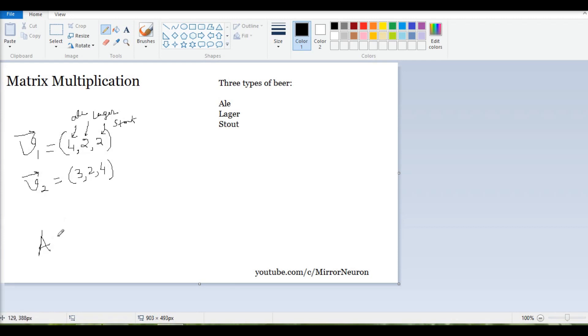Now an interesting way to represent this data is by a matrix. I can simply put them this way: it's 4, 2, 2 and 3, 2, 4. What happens is the data becomes more organized, and I can do the same kind of operations which I would have done with the vectors.